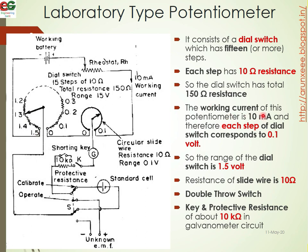The working current of the potentiometer is 10 milliamperes. Therefore, each step of the dial switch corresponds to 0.1 volt. The maximum measurable voltage is 1.5 volts.